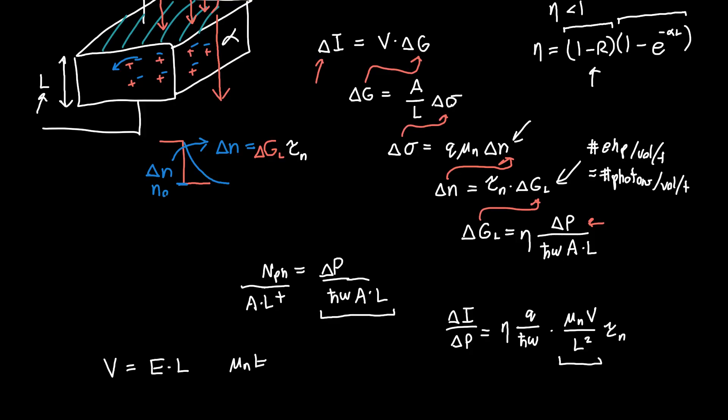...mu_n times the electric field, and this is nothing but the electron velocity. Then on the bottom we'll have L.